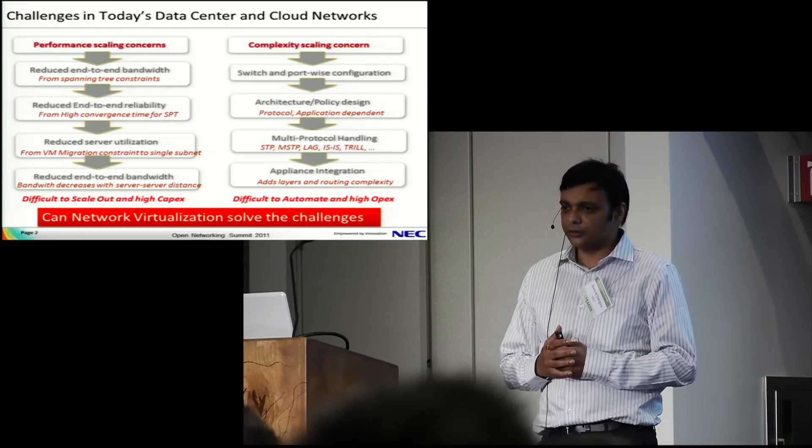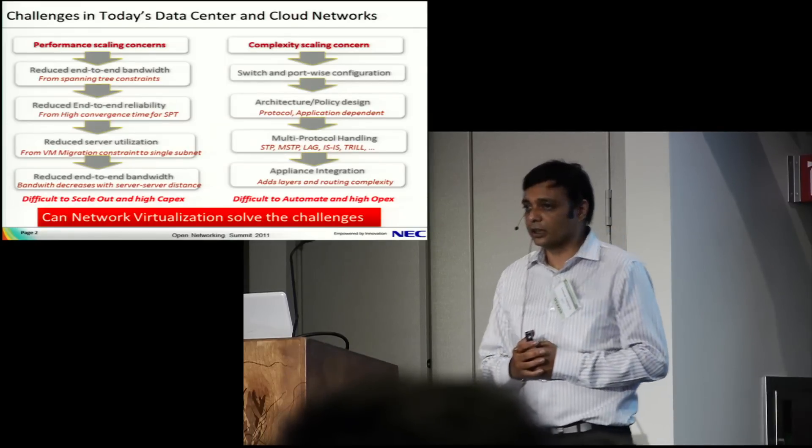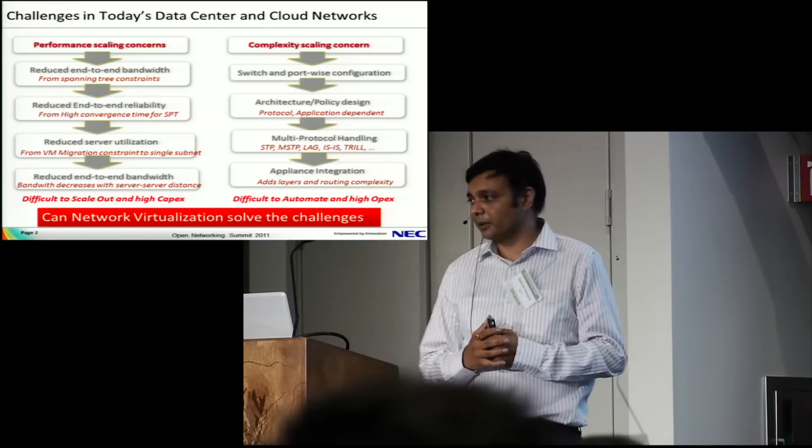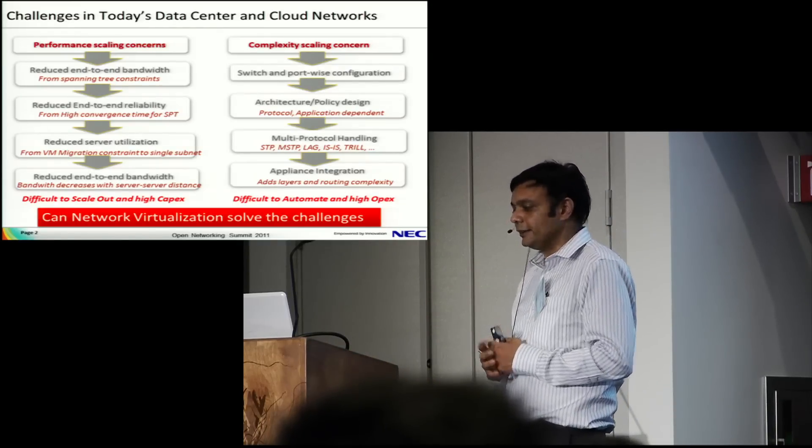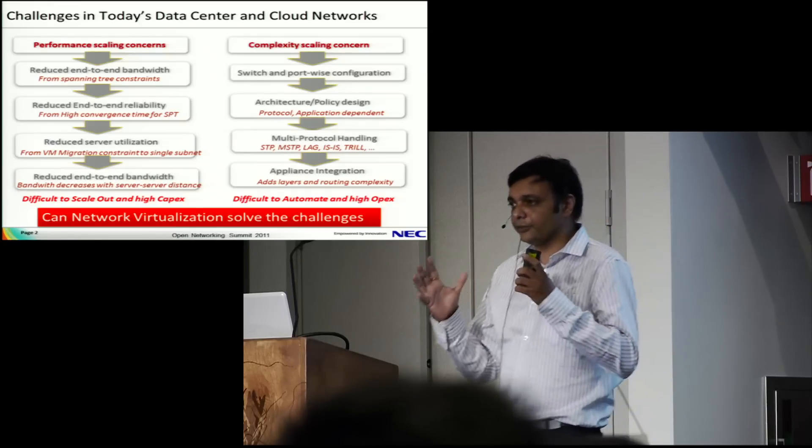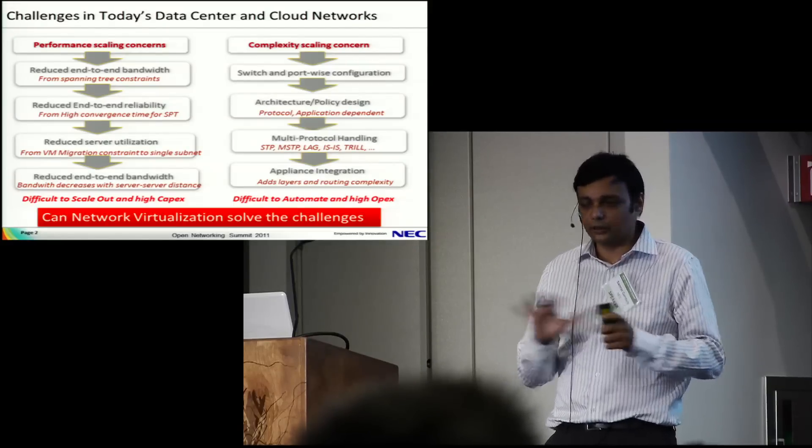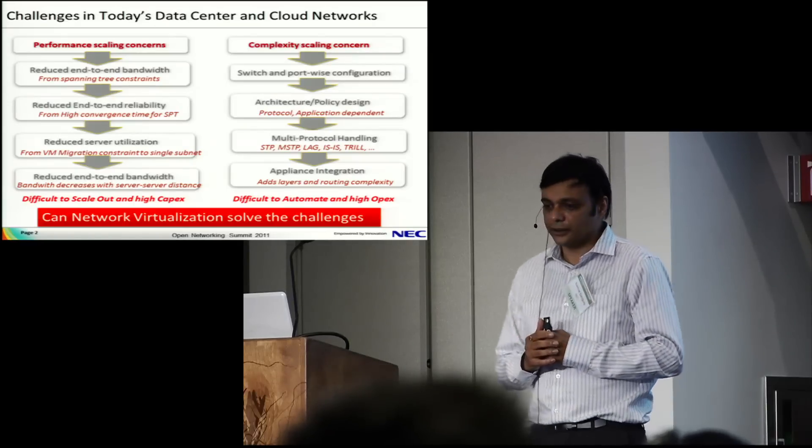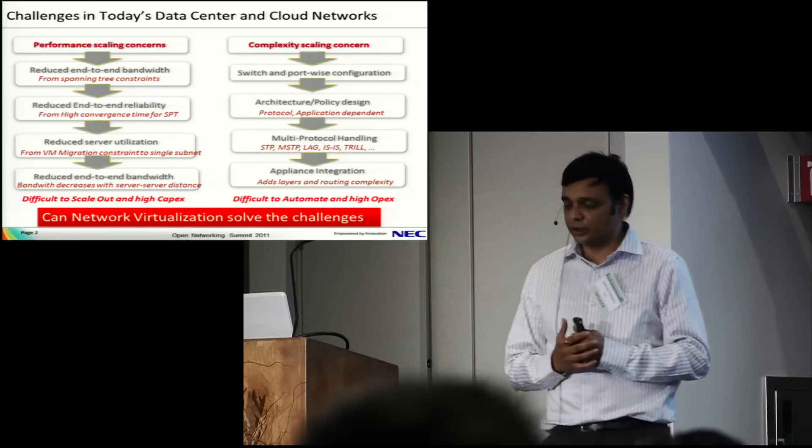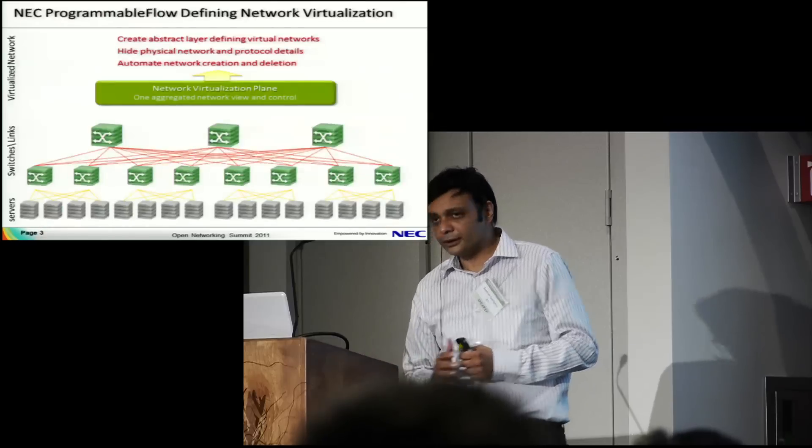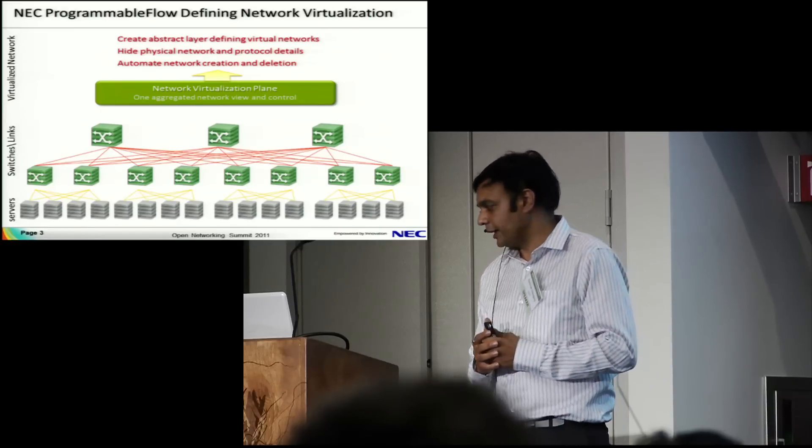With more virtual appliances now coming in cloud networks, it becomes difficult to integrate these appliances and bring on-demand appliances into the whole area. The complexities are adding up and leading to difficulty in automation because you don't have a homogeneous view of what the network needs and how to program it. The question we're raising is: does network virtualization help, and does OpenFlow provide a better framework?